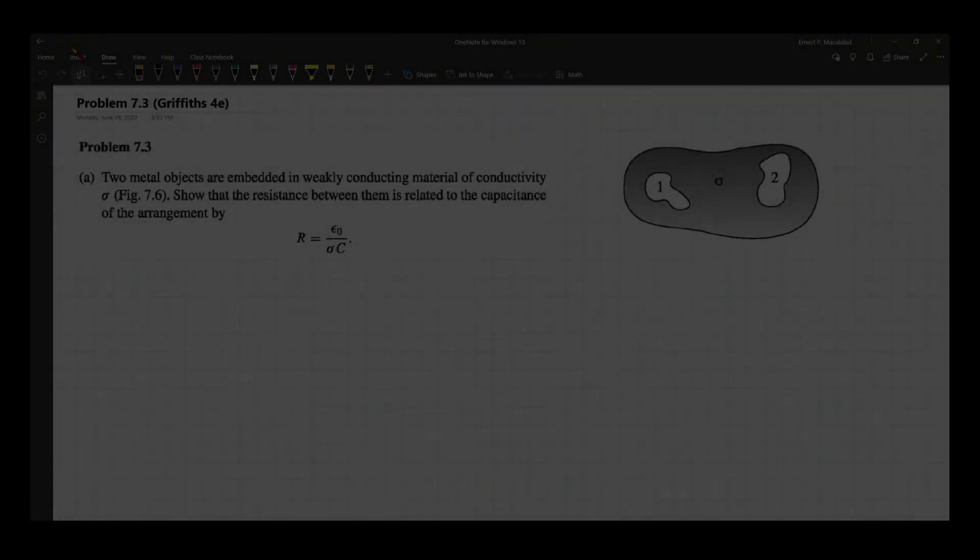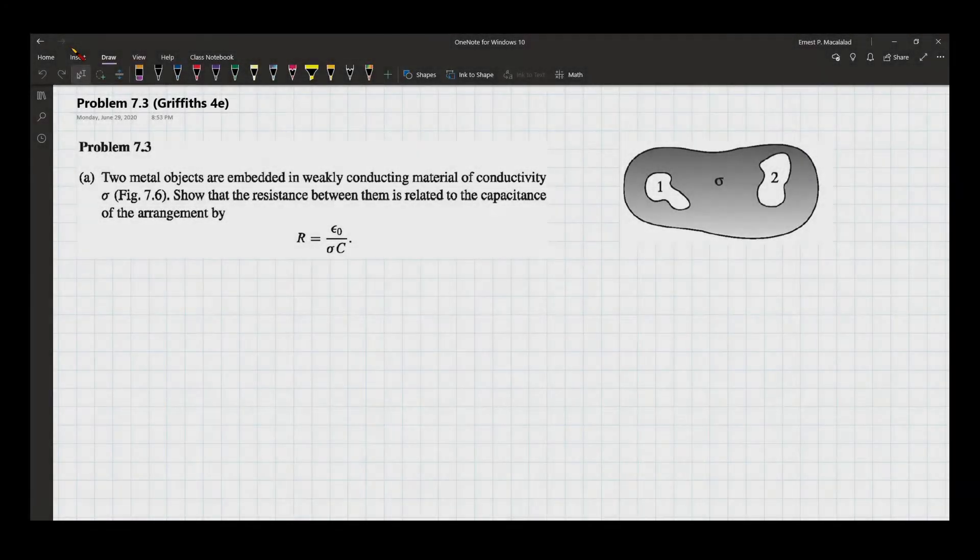So problem 7.3 of Griffiths has two parts. The first part states that two metal objects are embedded in weakly conducting material of conductivity sigma, as shown in the figure.